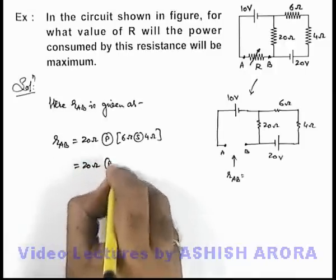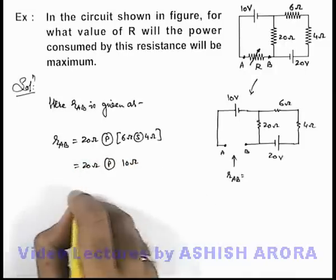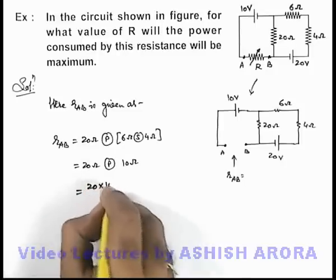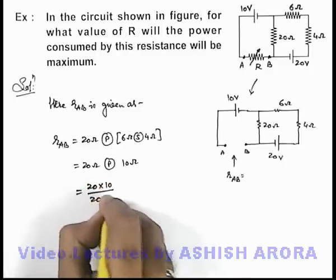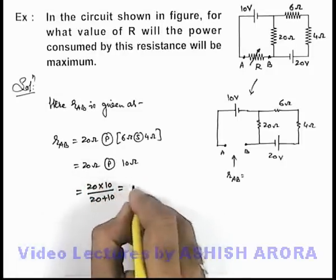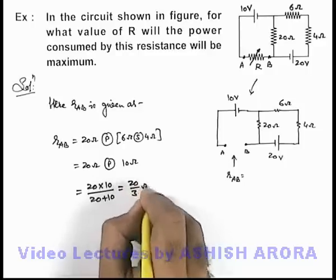So this is 20 ohm in parallel combination with 10 ohm resistance which can be written as 20 multiplied by 10 divided by 20 plus 10, and the final result is 20 by 3 ohms.